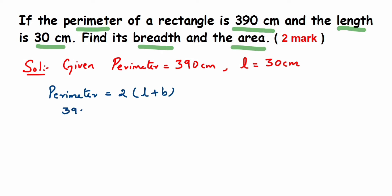So perimeter is 390, just write down 390 on the left hand side, and substituting the values here, this is equal to 2 into—we know length which is 30, but we don't know the breadth, so just write down B.